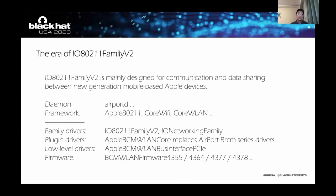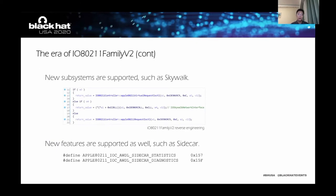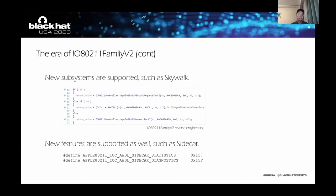However, with the development of mobile devices, we can see that the design concepts of the Wi-Fi subsystem have changed. IO80211 Family version 2 is mainly designed for communication and data sharing between the new generation mobile-based Apple devices. And AirPort no longer appears in the name of the kernel extensions — it's all removed. Here are two examples. We can see that the new subsystem is better supported, such as Skywalk. Reverse engineering shows that many functions integrate at least three branches, which lead to a different subsystem. And Skywalk is the one that was recently introduced. For new features, Sidecar was recently introduced as well.